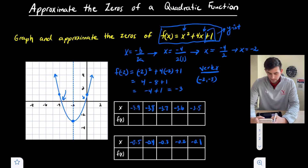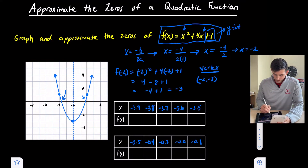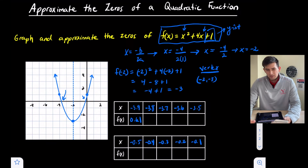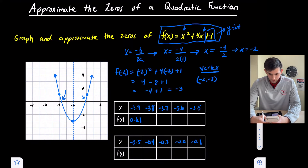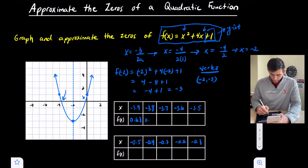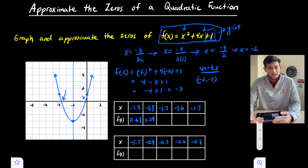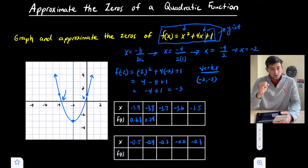Let's plug in those x values. For negative 3.9: (-3.9)² + 4(-3.9) + 1 gives us 0.61. For negative 3.8: (-3.8)² + 4(-3.8) + 1 gives us 0.24. Notice both y values are positive. What we're looking for is a change in sign — when we go from a positive value to a negative value. Once that happens, we know zero is somewhere in between, and we can use that to approximate to the nearest tenth.